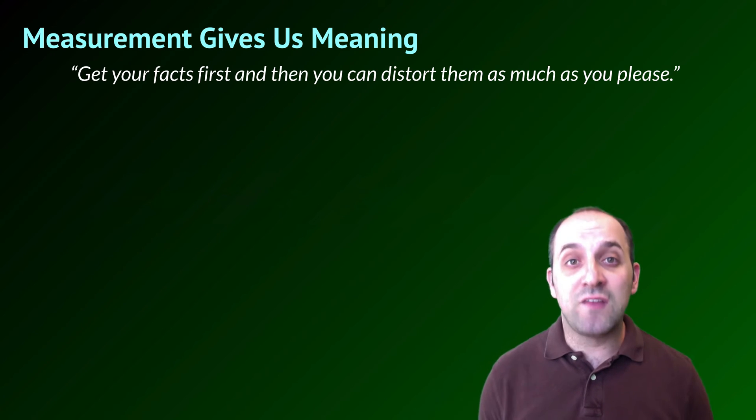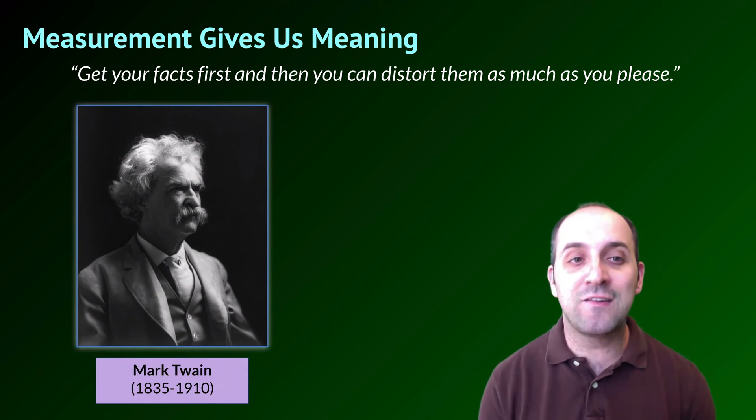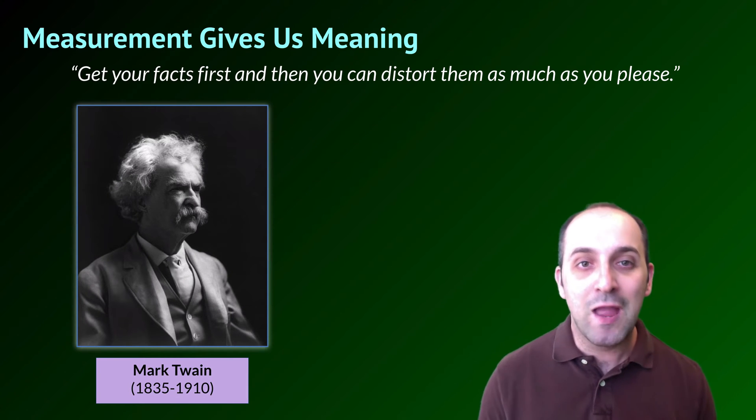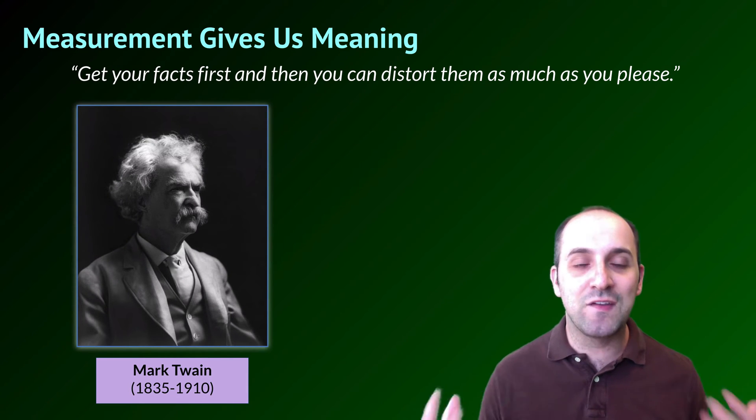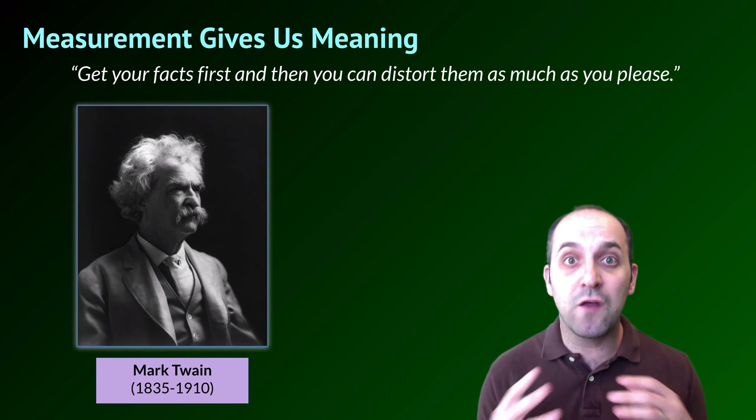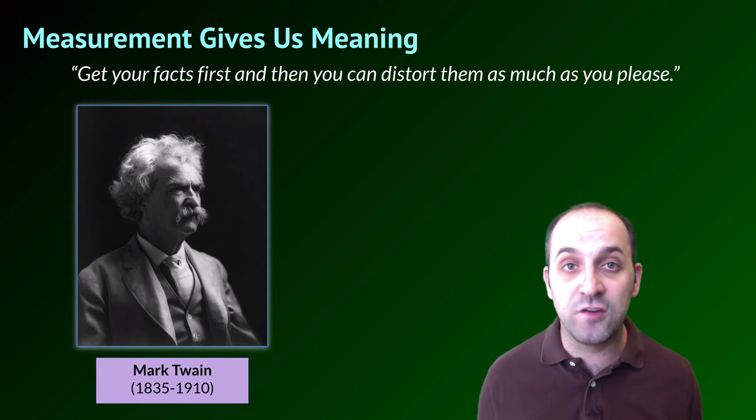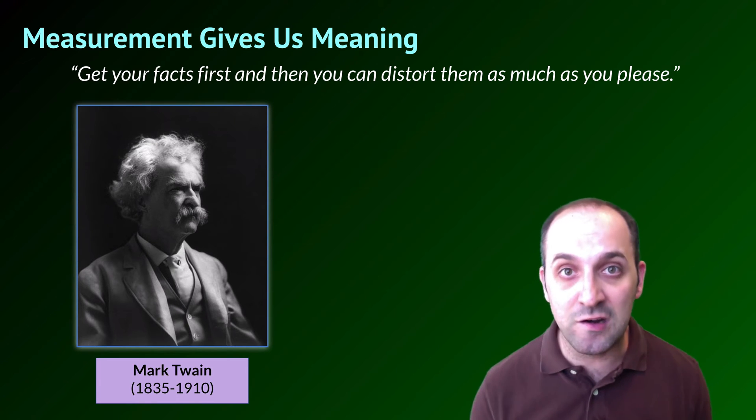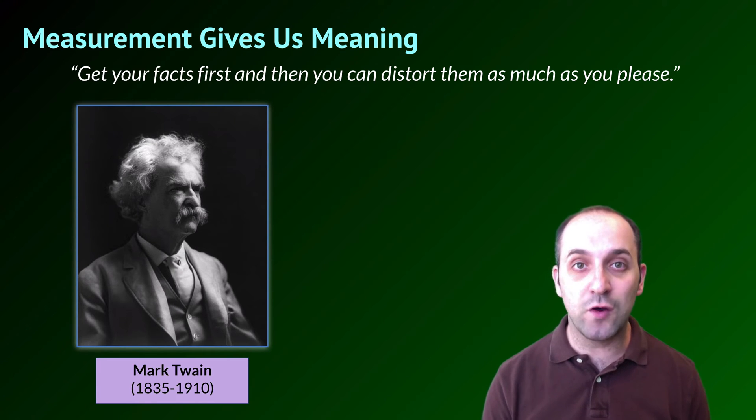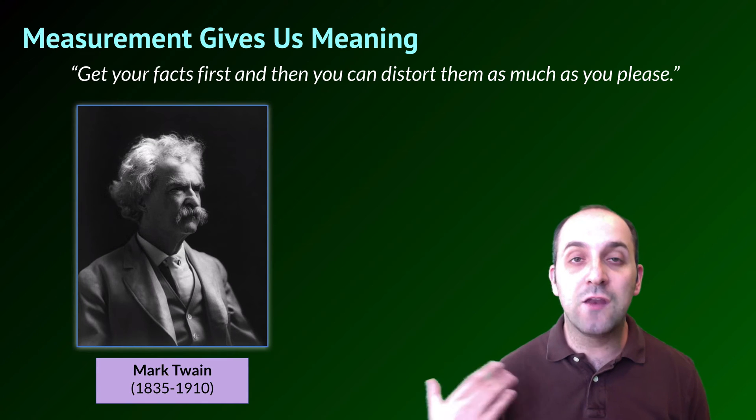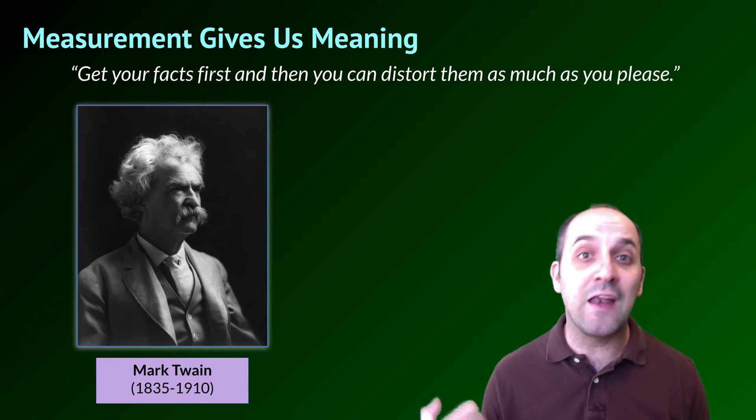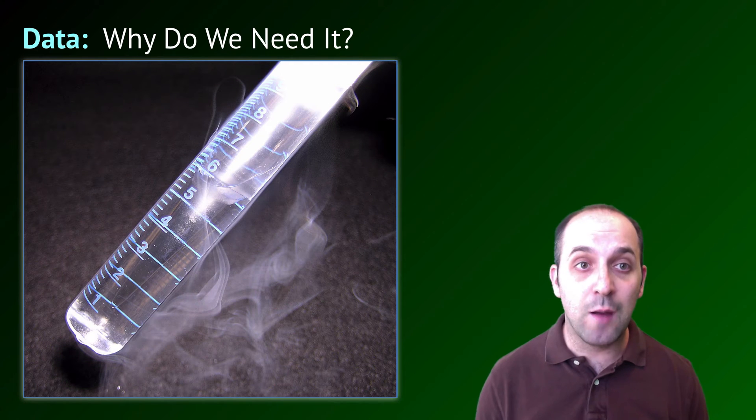We measure things in order to get meaning out of them. So Mark Twain once said, get your facts first, and then you can distort them as much as you please. And what he meant was, you need to absolutely get an understanding of what the real measure of the situation is before you can start to interpret it. Of course, he meant it in his cynical Mark Twain way, but it still gets at the same point. The way that we construct meaning in science is through measuring things, and that goes back to that notion of numbers.